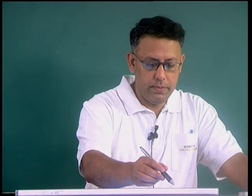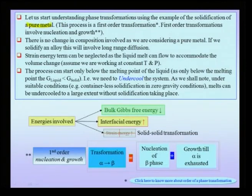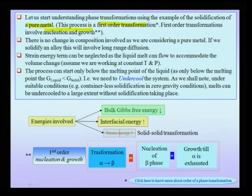Let us start phase transformations in detail using the example of solidification of a pure metal. This is a simple illustrative example, but some important points are applicable to other phase transformations as well. This is a first order phase transformation, and such first order phase transformations involve nucleation and growth. That means the phase transformation has two steps: one is nucleation, another is growth, and we will see these in considerable detail very soon.